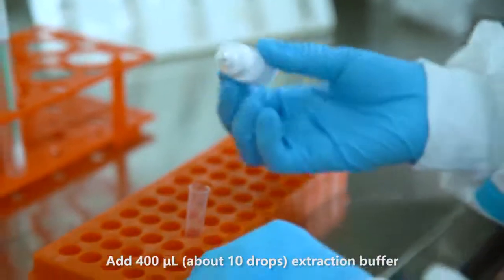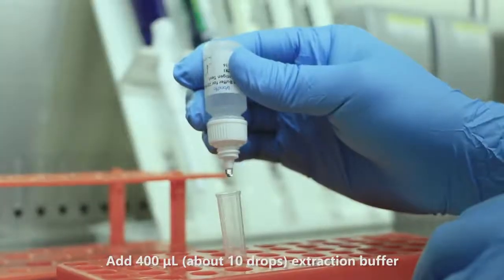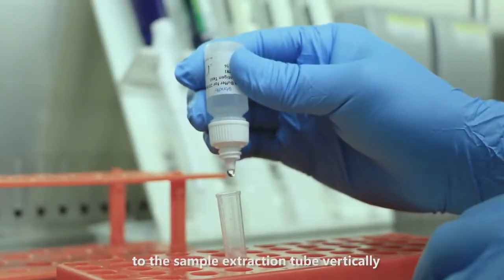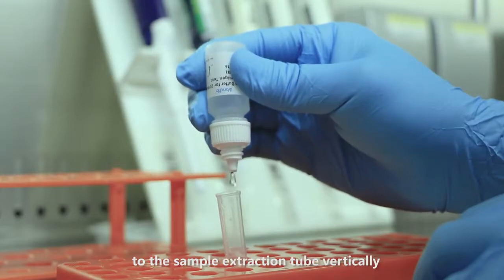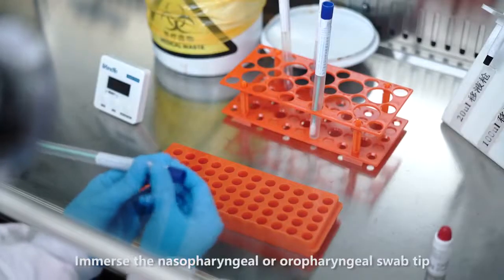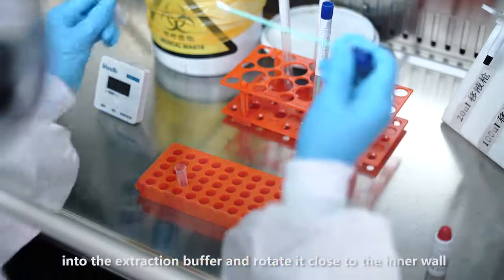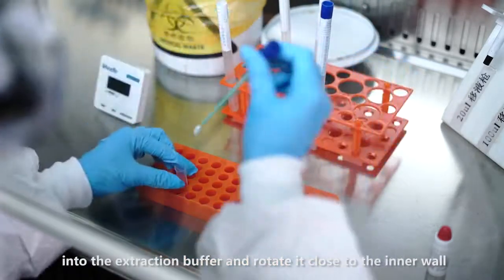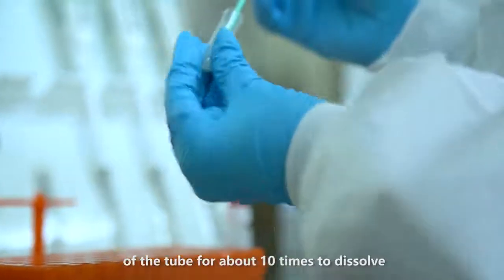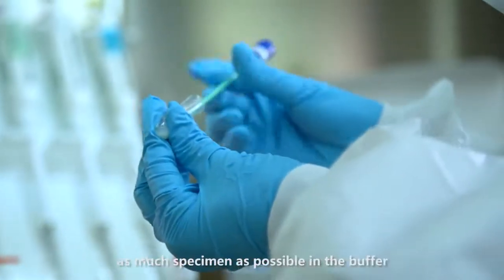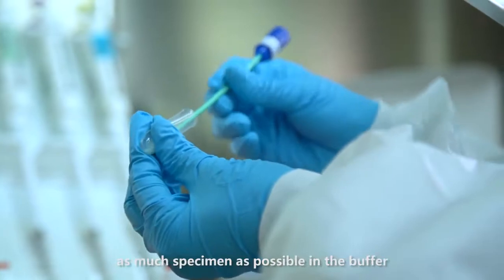Add 400 microliters, about 10 drops, extraction buffer to the sample extraction tube vertically. Immerse the nasopharyngeal or oral pharyngeal swab tip into the extraction buffer and rotate it close to the inner wall of the tube for about 10 times to dissolve as much specimen as possible.